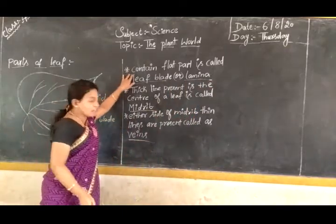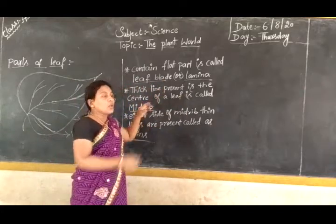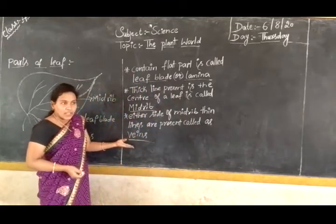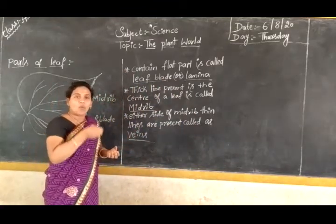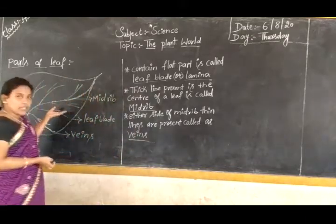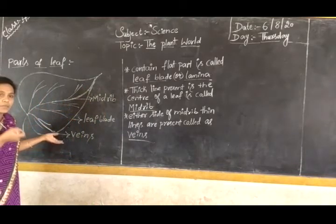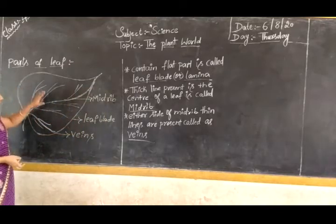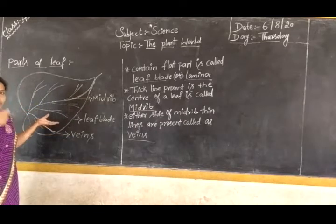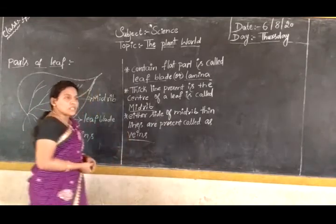The leaf blade and midrib support the leaf and also give shape to the leaf. The veins help in carrying water and minerals from the soil to the leaf, and then to the other parts of the plant. This is the function of the veins.